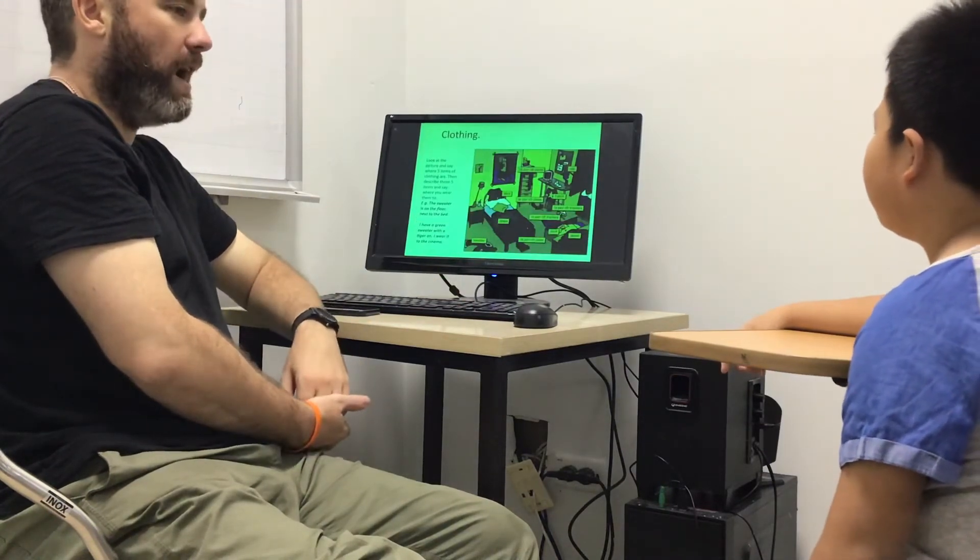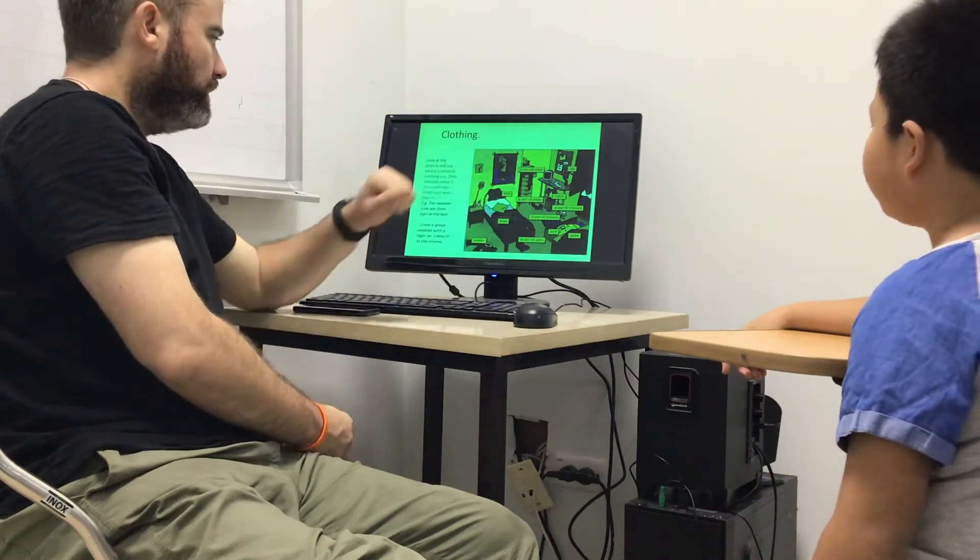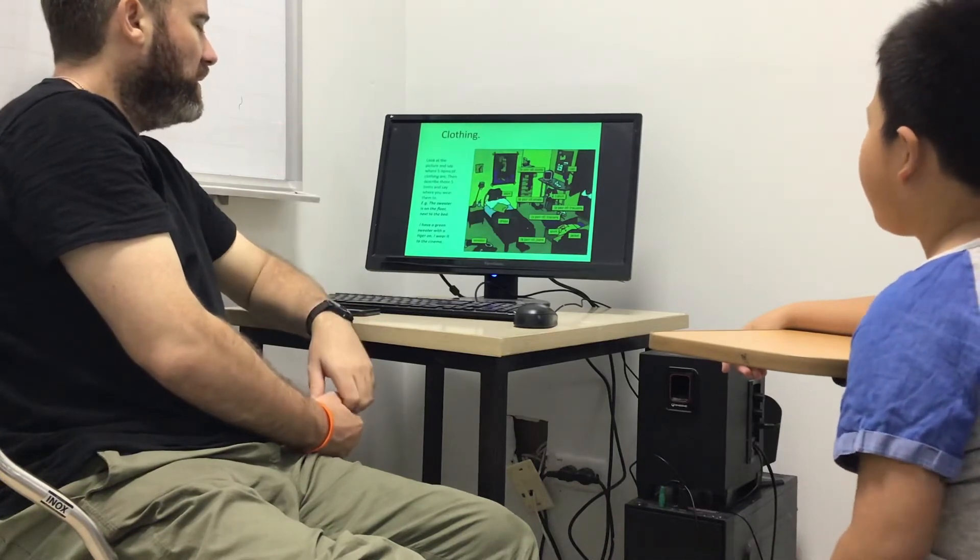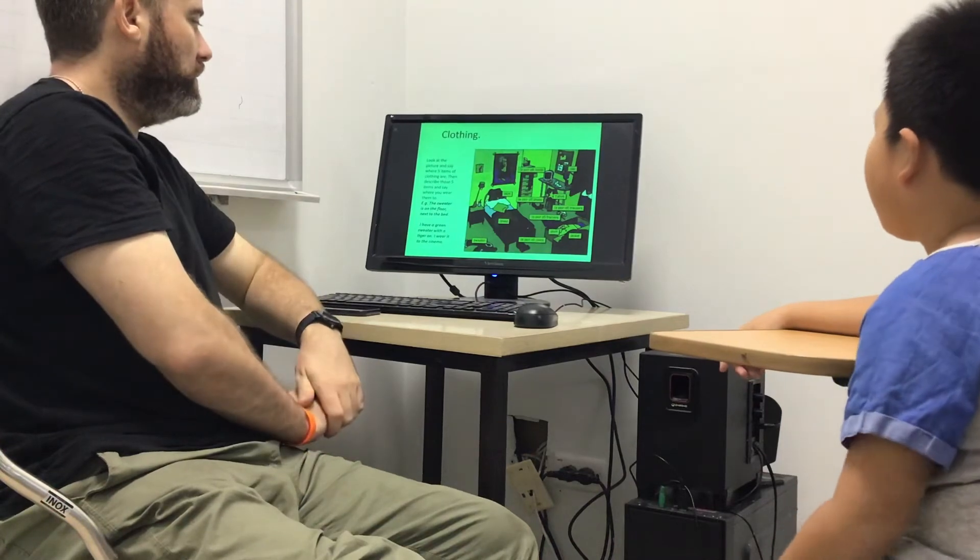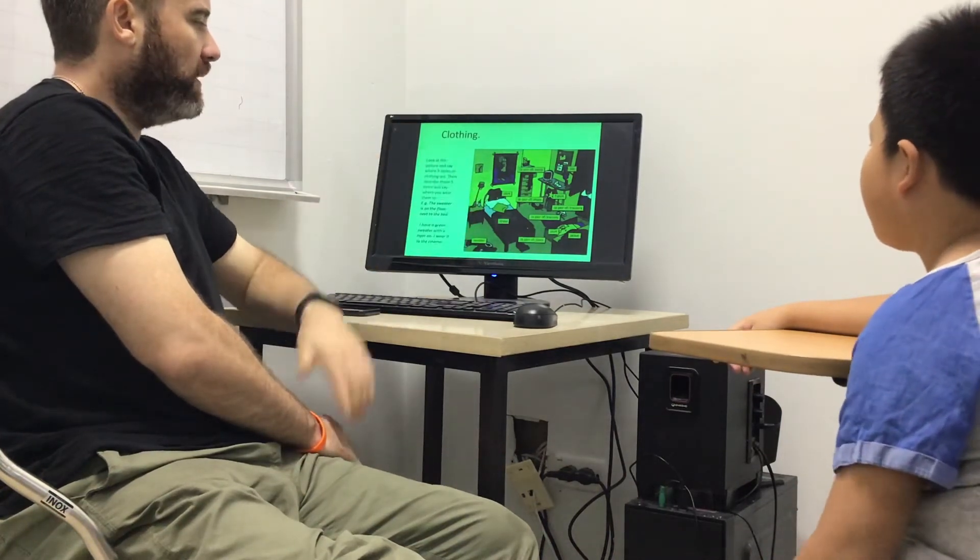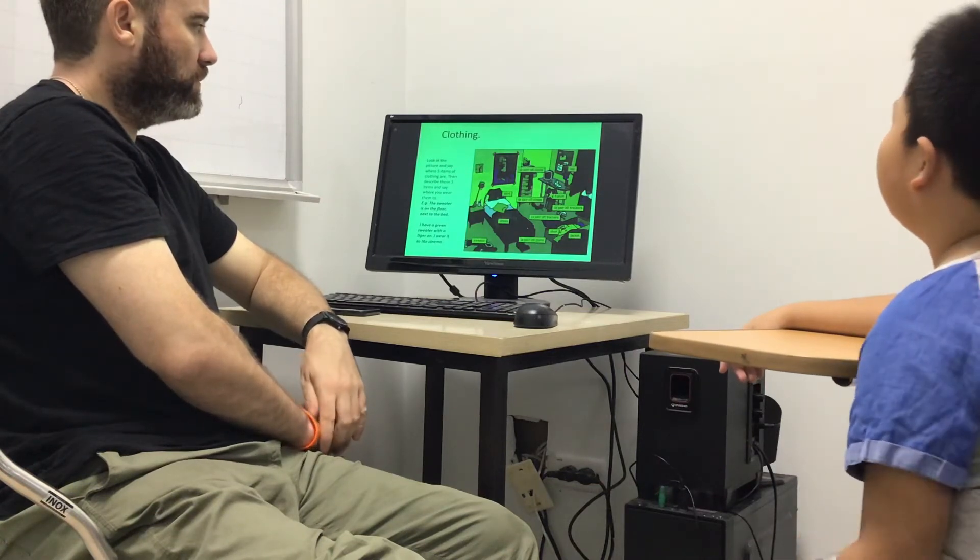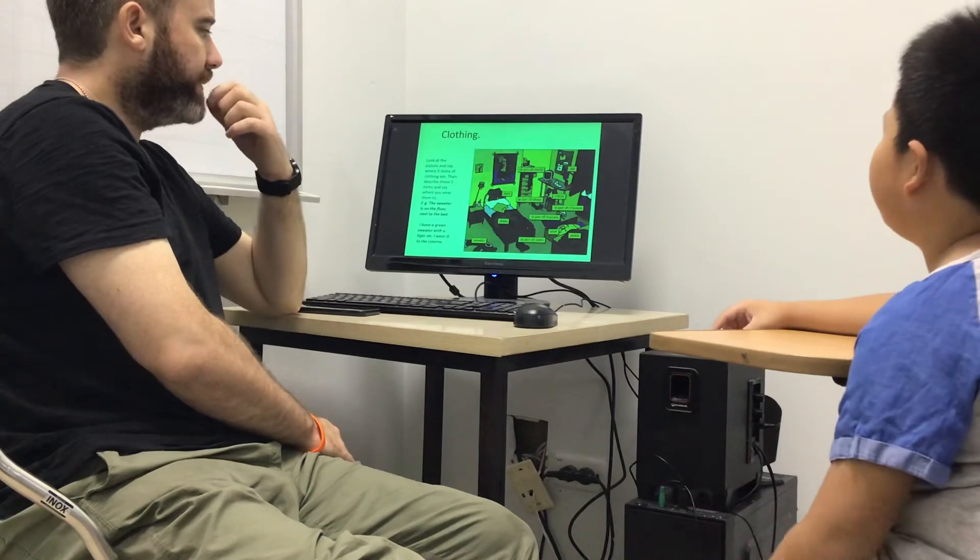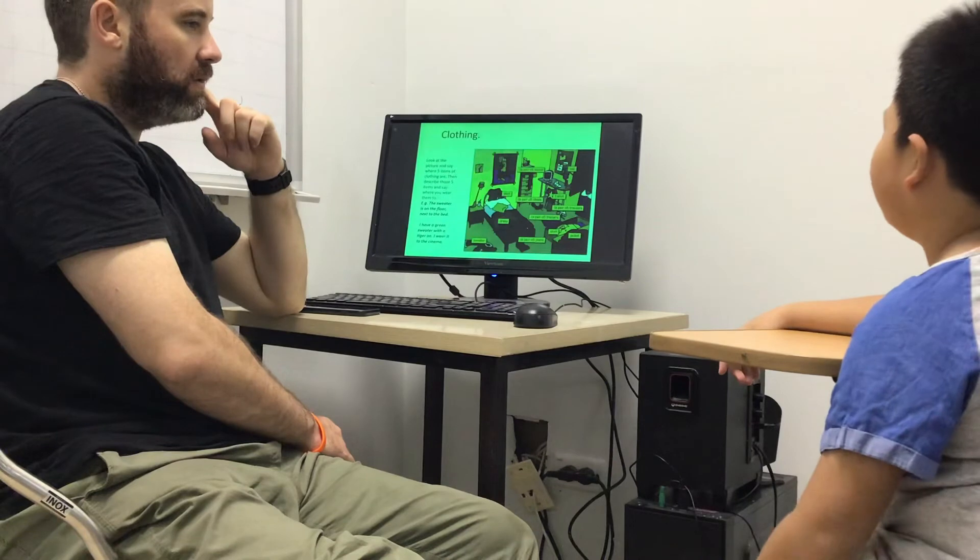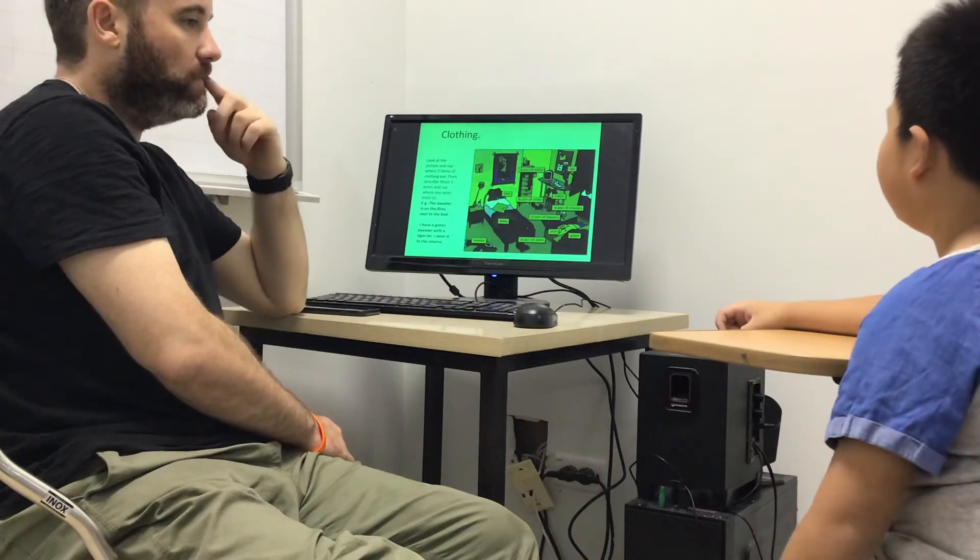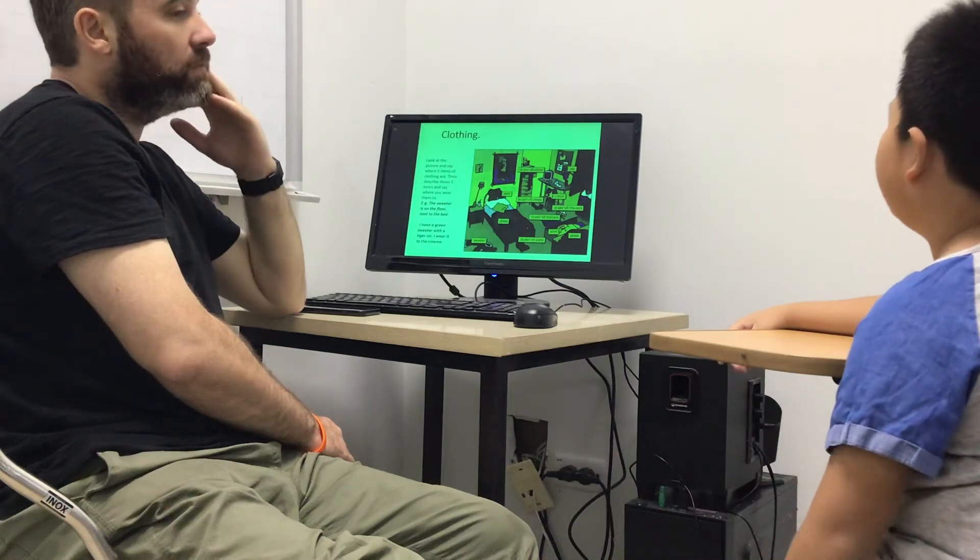Now, clothing. Look at the pictures and say where five items of clothing are. Then describe and say where you wear them too. So pick an item and tell me where it is. The shirt? It's in the drawer. Where is it? It's in the drawer. And I wear it when I went to school.